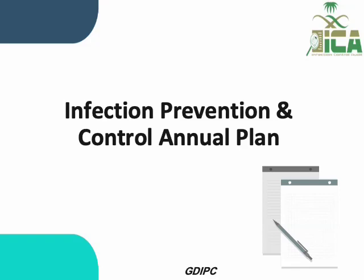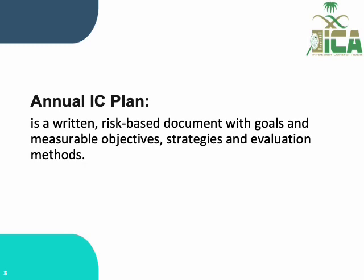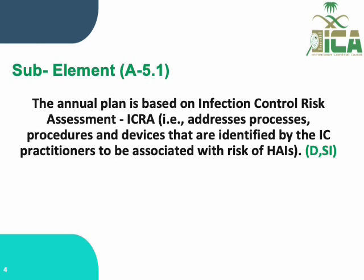Welcome to our lecture about Element A5 in our ICA, which covers infection prevention and control annual plan. Element A5 is composed of four sub-elements and activities for auditing those sub-elements with either documentation or staff interview. The score, as usual, is 0, 1, or 2. The annual infection control plan is a written risk-based document with goals and measurable objectives, strategies, and evaluation methods.